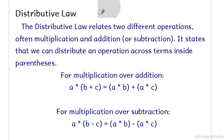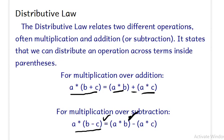Second is the distributive law. This law states that with two different operations like multiplication and addition or subtraction, we can distribute an operation across terms inside the parentheses. So A into (B plus C) is the same as A into B plus A into C — that is distribution of multiplication over addition. Similarly, A into (B minus C) is the same as A into B minus A into C.